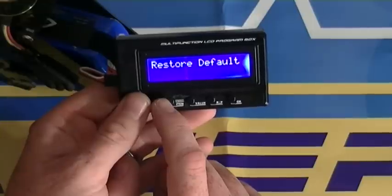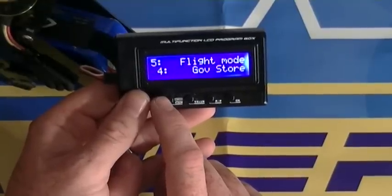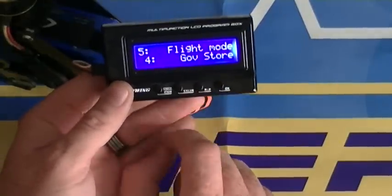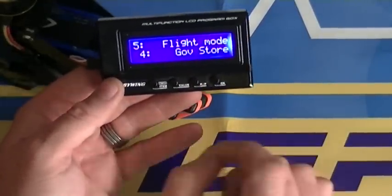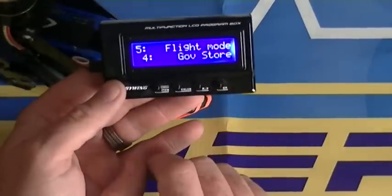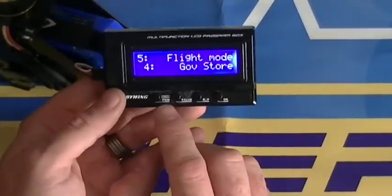Or if you screw up something on the governor store, you can go and switch the value to airplane mode, select okay, unplug the ESC, plug it back in, and then go back to governor store and save it again.